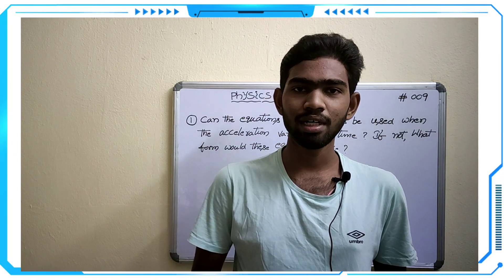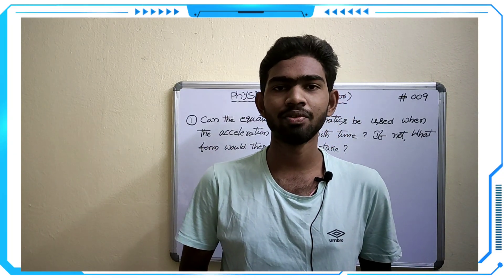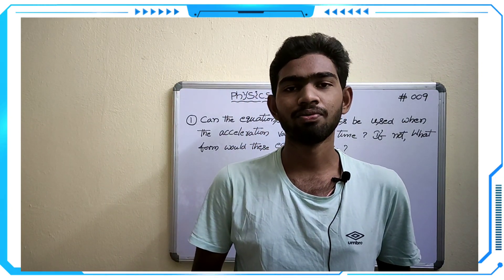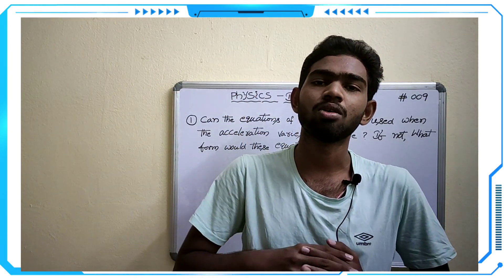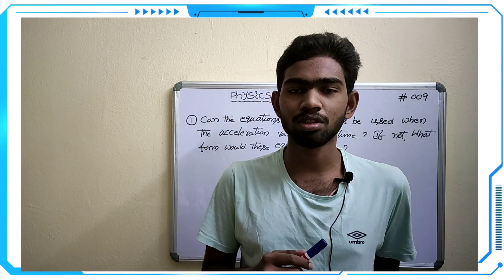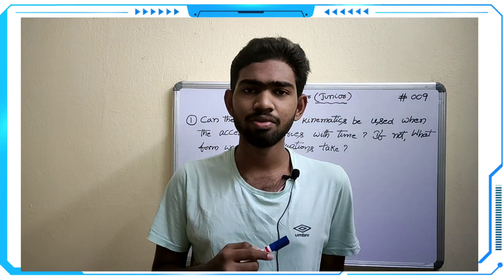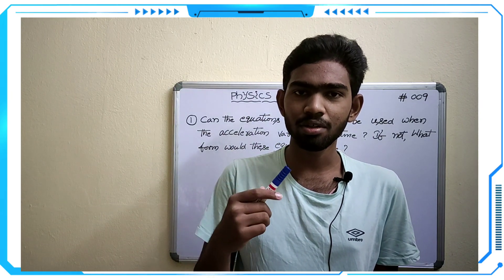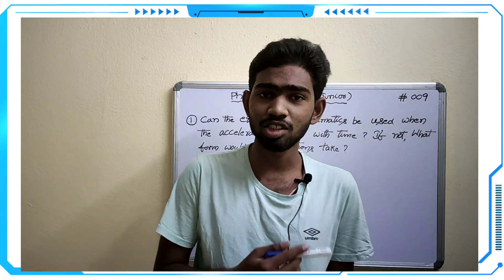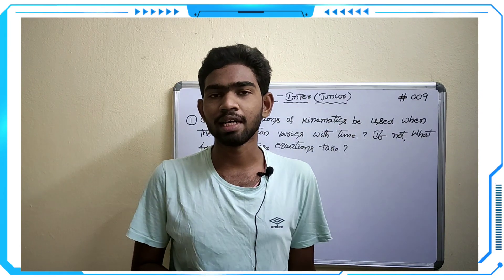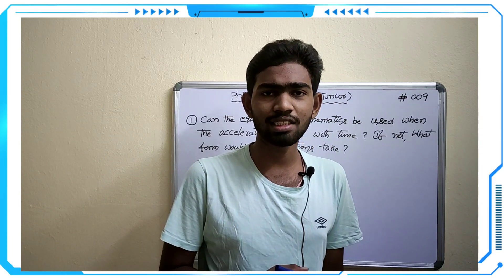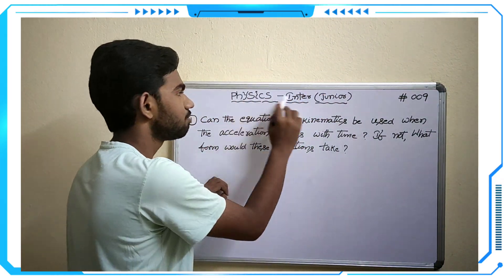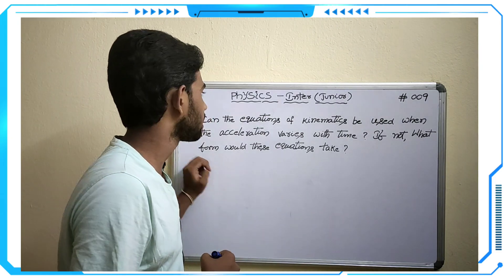Hello students, today we will discuss the ninth video in our series on motion in a straight line — the four-mark question. In previous videos we discussed the physical world chapter questions and units and measurements. We already completed two-mark questions in this chapter, and now in video nine we are discussing the motion in a straight line four-mark question for physics intermediate.